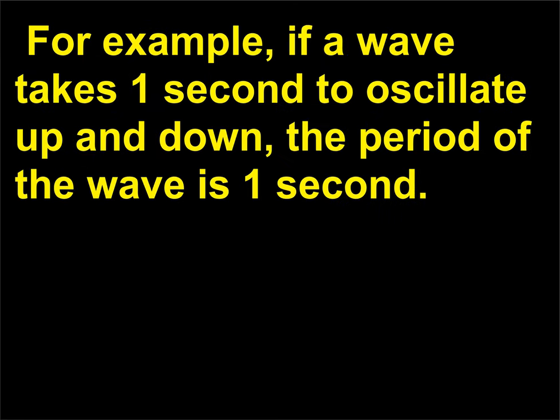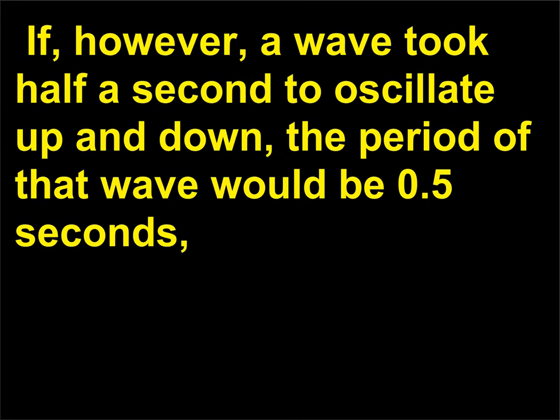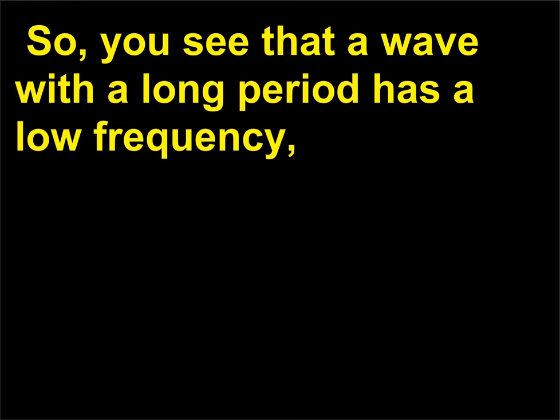For example, if a wave takes one second to oscillate up and down, the period of the wave is one second. The frequency is the reciprocal of that, one cycle per second, because only one cycle occurred in a second. If, however, a wave took half a second to oscillate up and down, the period of that wave would be 0.5 seconds, and the frequency would be the reciprocal, or two cycles per second. So you see that a wave with a long period has a low frequency, while a wave with a short period has a high frequency.